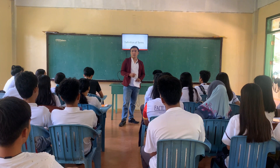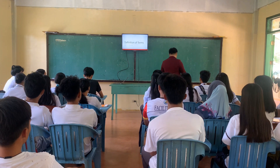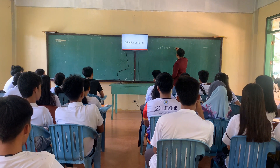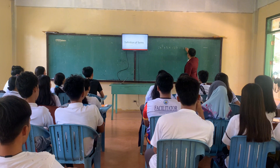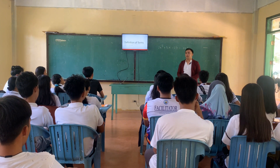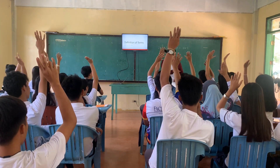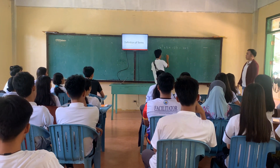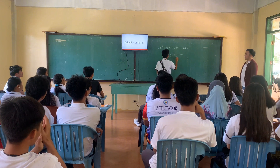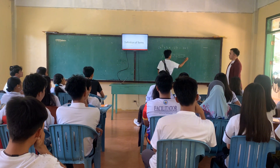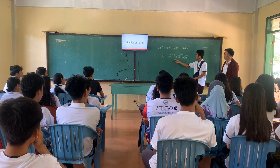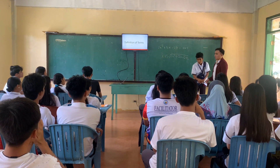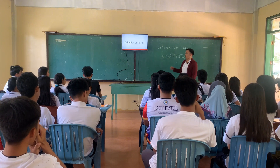So let's try now to review your lesson about long division. For example, we have 2x squared plus 5x minus 23 divided by x plus 5. Who among you here can arrange the dividend and divisor? The dividend is 2x squared plus 5x minus 23, where the divisor is x plus 5.